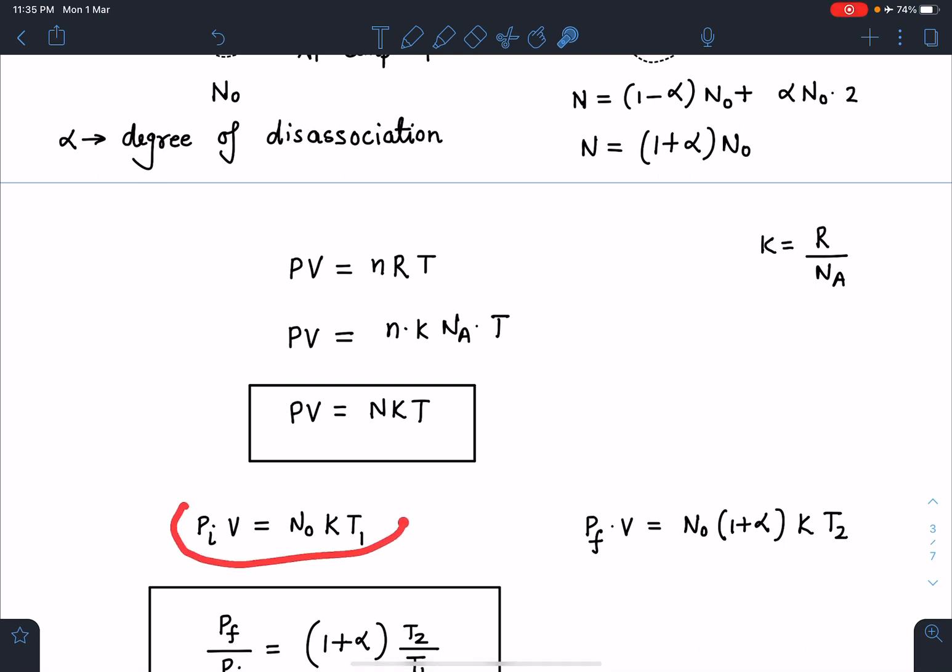At initial condition if we apply P₁V = N₀kT₁ - at temperature T₁, N₀ is the number of molecules. So initial pressure I can relate like this and volume of the chamber or container remains the same. So here you can also see that P_final into V is equal to N₀(1+α)kT₂. This is going to be the final condition in this case.